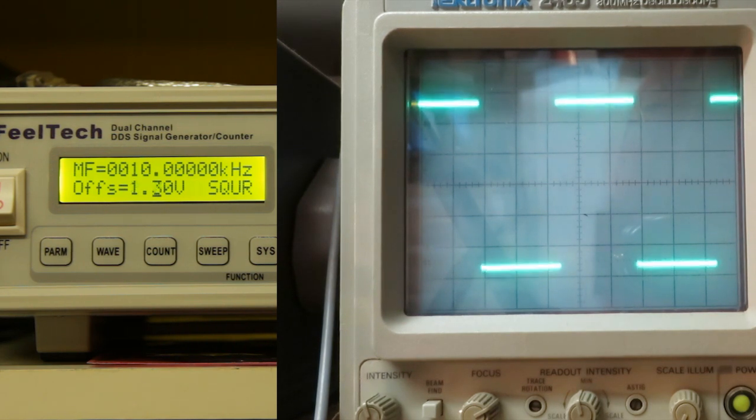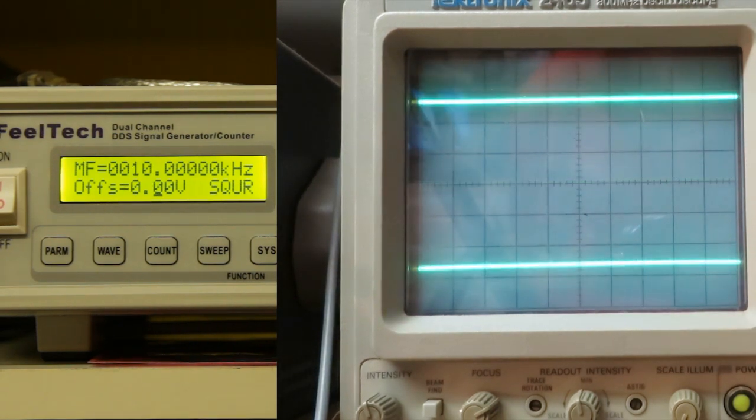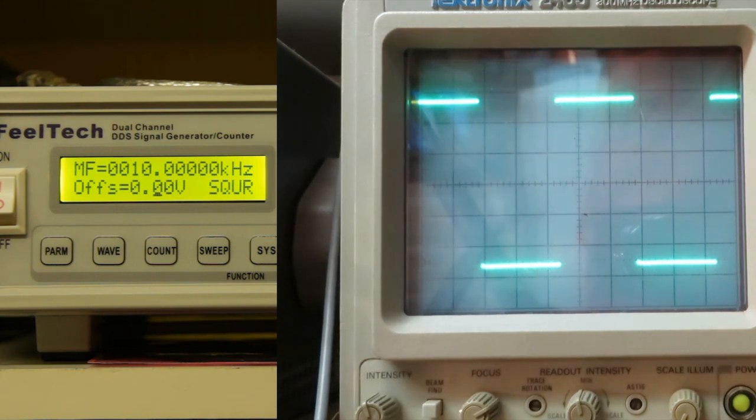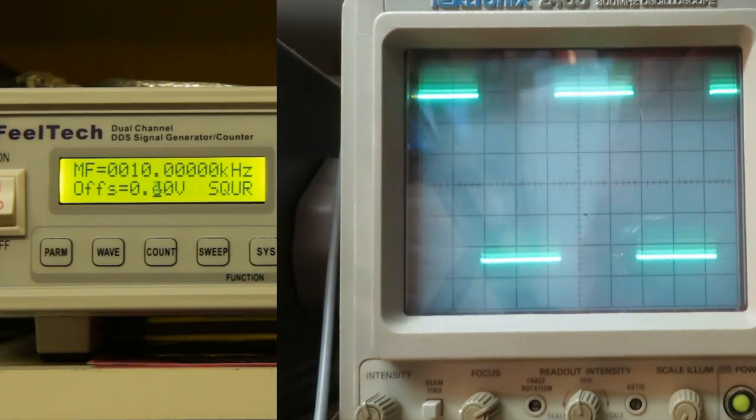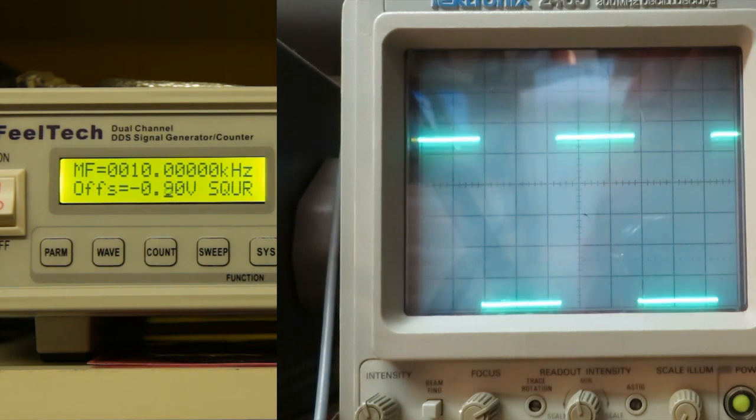There is no change because the scope is in AC mode. So now it is in DC mode and we can see changing the offset. Possible is plus and minus 10 V.